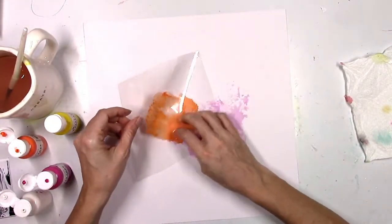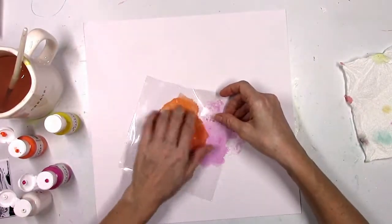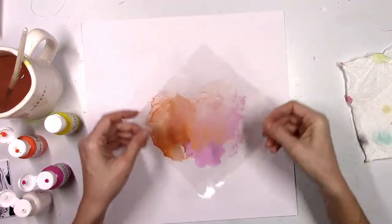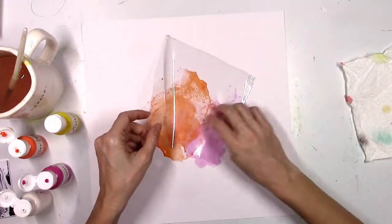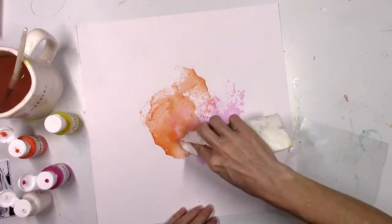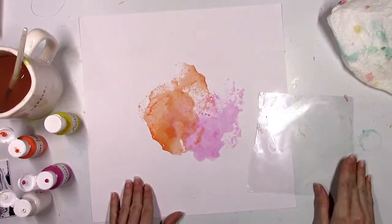And to do this technique you don't need a whole lot of water, but you do need some to kind of make the paint a little bit thinner and make it a little bit watery. You can see the result there when you turn it over and smush it down.